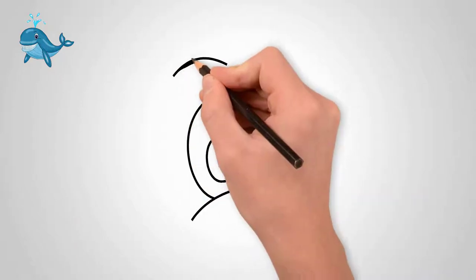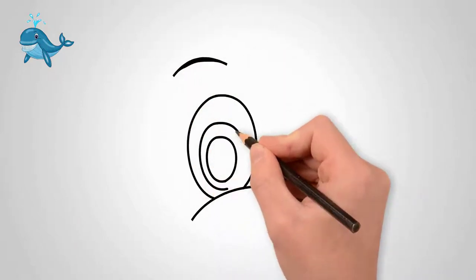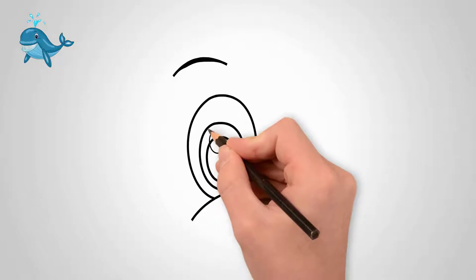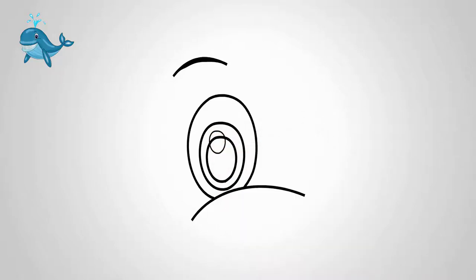First, draw an eye. Draw the pupil of the eye. Draw two circles. One circle is smaller, and the other is larger.